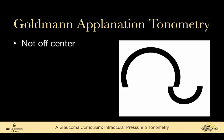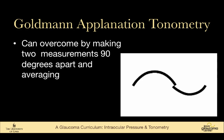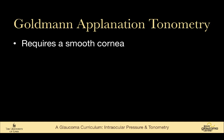Also, don't want to be off-center. You also don't want the mires to be oblong — if the patient has a lot of astigmatism, the mires will not be perfect half circles. You can overcome this by making two measurements 90 degrees apart and averaging them, or by lining up the tonometer tip with the axis of the minus cylinder.